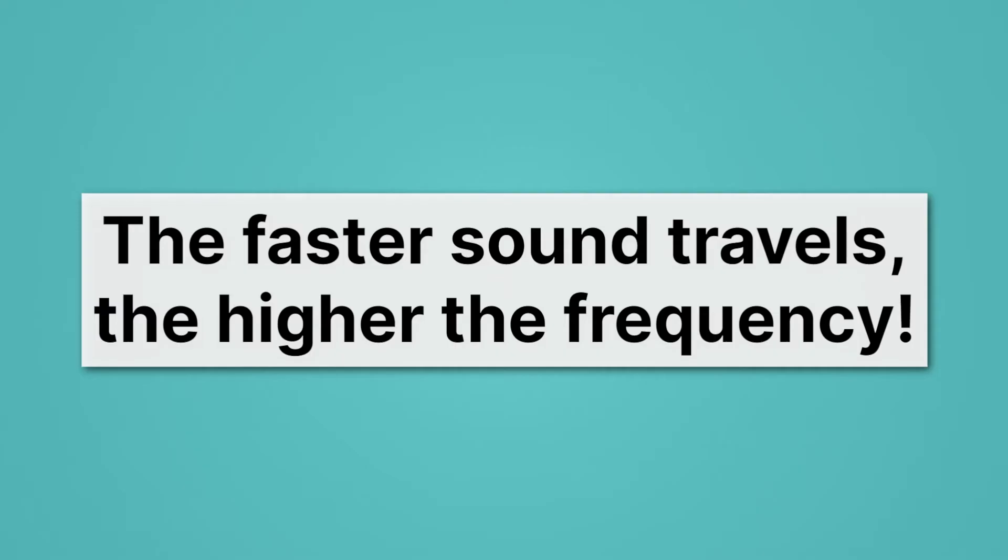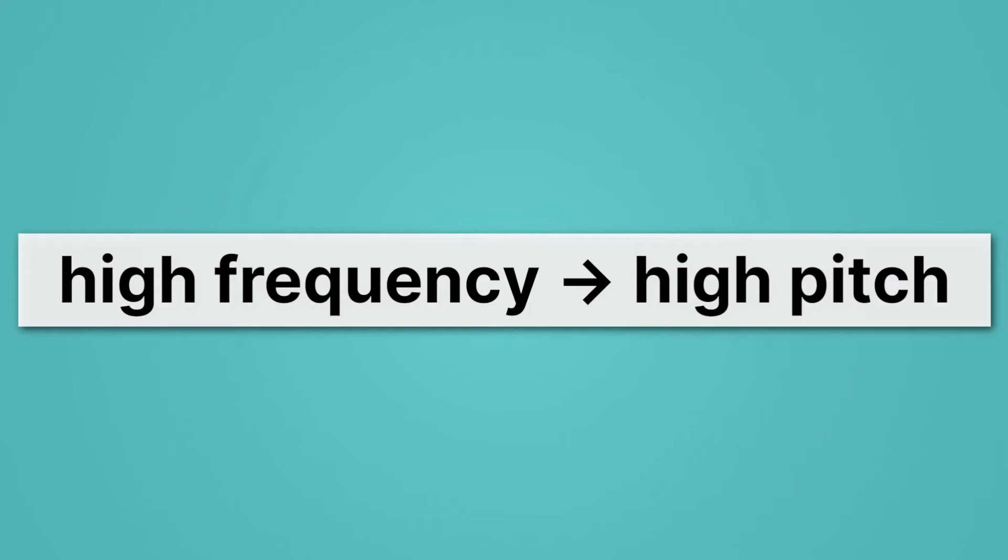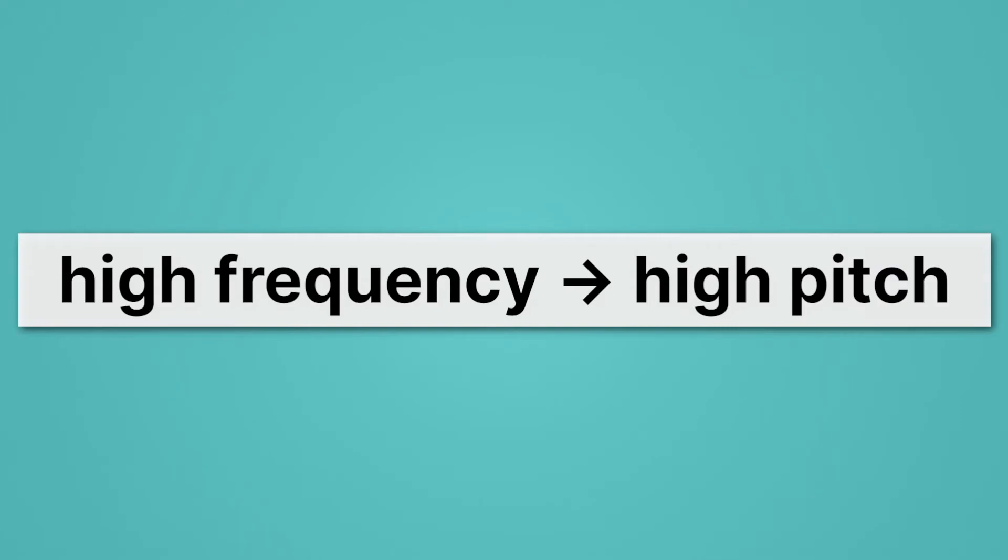How do we experience frequency? We said we experience amplitude as the volume. Well, it turns out the frequency is experienced as pitch. So when we take a very large stringed instrument, it's relatively low frequency and relatively low pitch. When we make our stringed instrument smaller, then it's going to have a higher frequency and a higher pitch. So remember that high frequency sounds give us a high pitch sound.